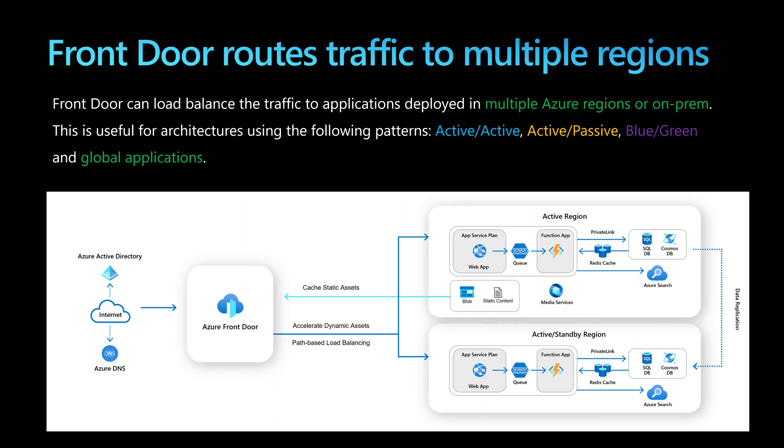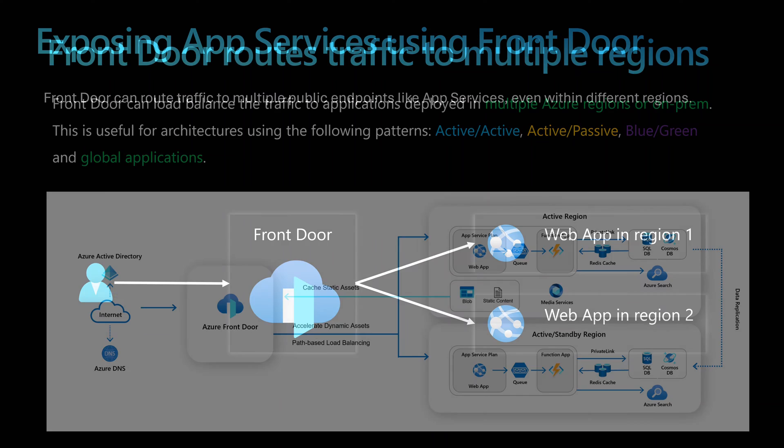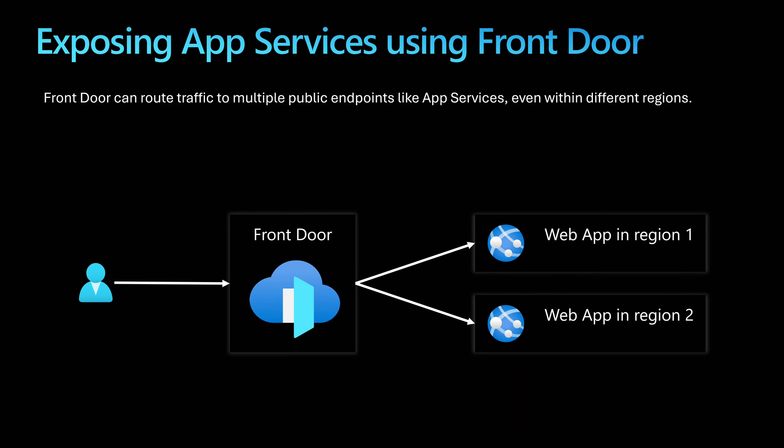Azure Front Door is also an enabler for high availability applications and for disaster recovery. You can deploy your application in multiple regions and configure Azure Front Door to route user traffic to a specific region based on criteria like least connections, better response time, or the nearest application to the user.